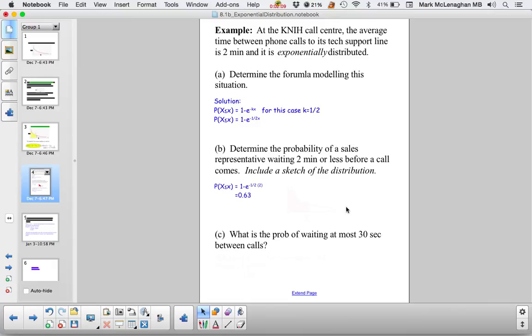So using that formula, we can solve the next problem. There's a probability that we have to wait 2 minutes or less between calls. So here I put it in the formula. x equals 2, so that makes e to the negative 1. So 1 minus e to the negative 1 is 0.63, or 63%. And the little graph looks something like that. That's the best of my painting abilities.